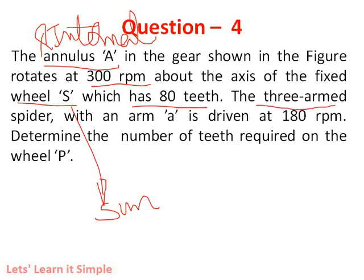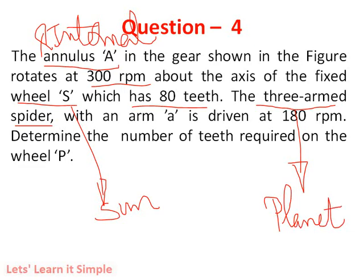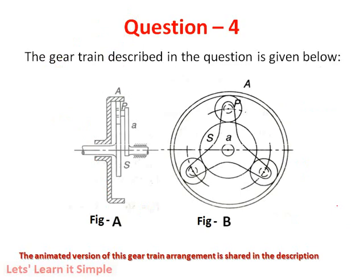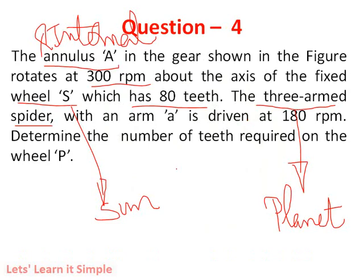Now we have a three-armed spider. This is what I said in the intro — the three-armed spider is another name for planet. So in the previous two videos, we discussed about Sun and Planet gear arrangement. Here we have a three-planet arrangement, and these three planets are identical, equal in geometry and number of teeth, connected with the help of a spider webbed arm. In that way it is called as a spider arm, or simply a planet.